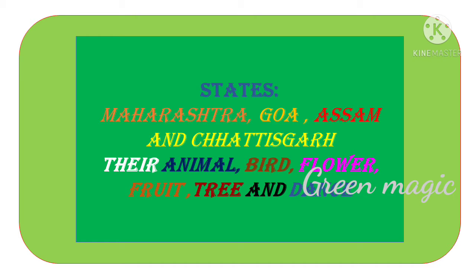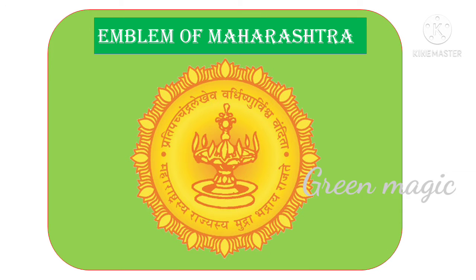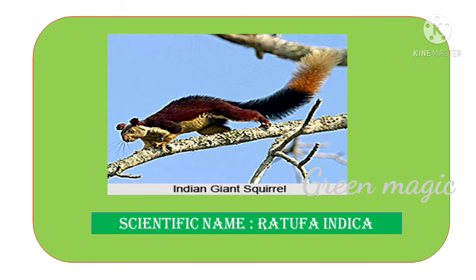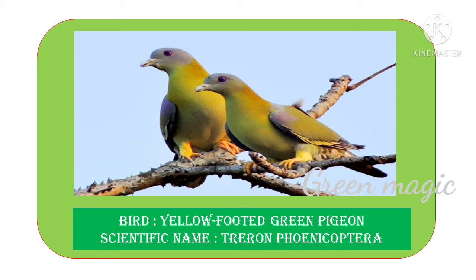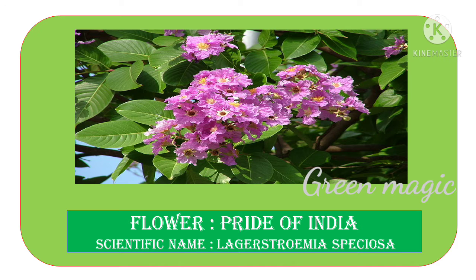The first one is Maharashtra. This is the map of Maharashtra. This is the emblem of Maharashtra. The state animal of Maharashtra is Indian Giant Squirrel. Bird: Yellow-footed Green Pigeon. Tree: Mango. Flower: Pride of India.